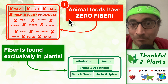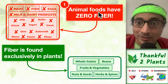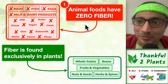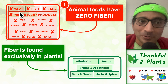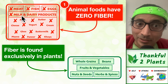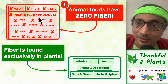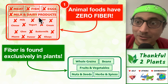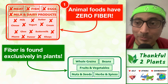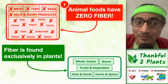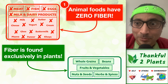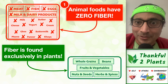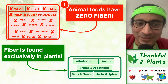Number one: animal products have zero fiber. Meat, fish, eggs, milk and dairy products like ghee, chaach, buttermilk, paneer, khoya, mawa, cream, cheese — these products do not have any fiber at all.